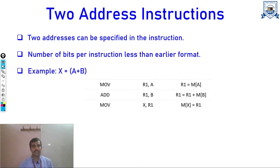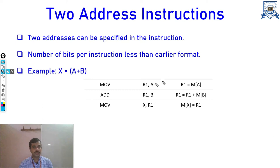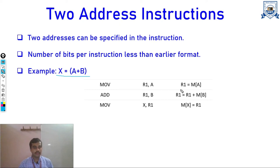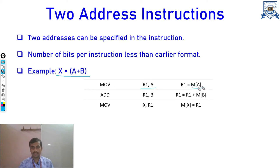The next instruction format is two-address instructions, which are similar to three-address instructions except that we store only two addresses in an instruction. The number of bits per instruction is therefore less than for three-address instructions. For example, to evaluate X = A + B, we can only manage two addresses per instruction.